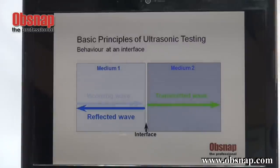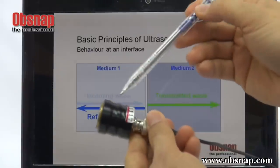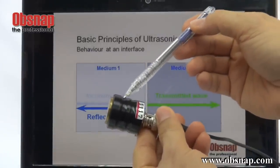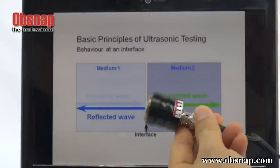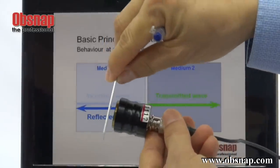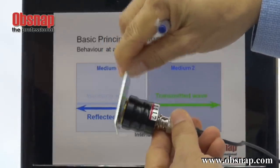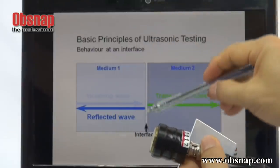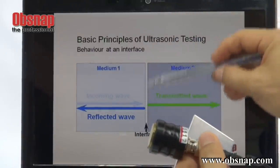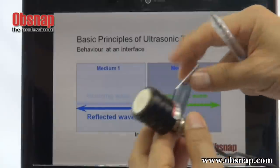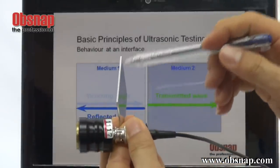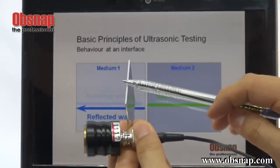Here is another important idea you all need to know. The sound wave generated by this probe, before it actually travels into another material — say, aluminum — there is what we call an air gap. With this air gap present, no sound wave can actually transmit into the aluminum, meaning no measurement or detection can be done.